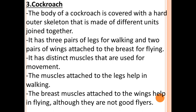The next animal is the cockroach. You have seen cockroaches moving in your house and kitchen. Some cockroaches fly and some walk. Cockroaches have three pairs of legs — that is six legs total — and two pairs of wings, making four wings. Because of these two structures, cockroaches can move: they use their legs for walking and their wings for flying.